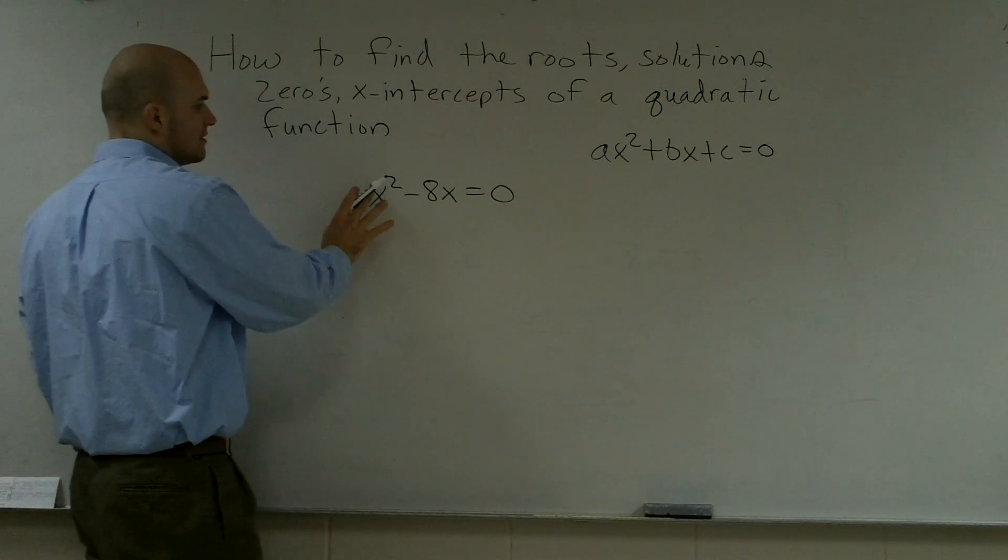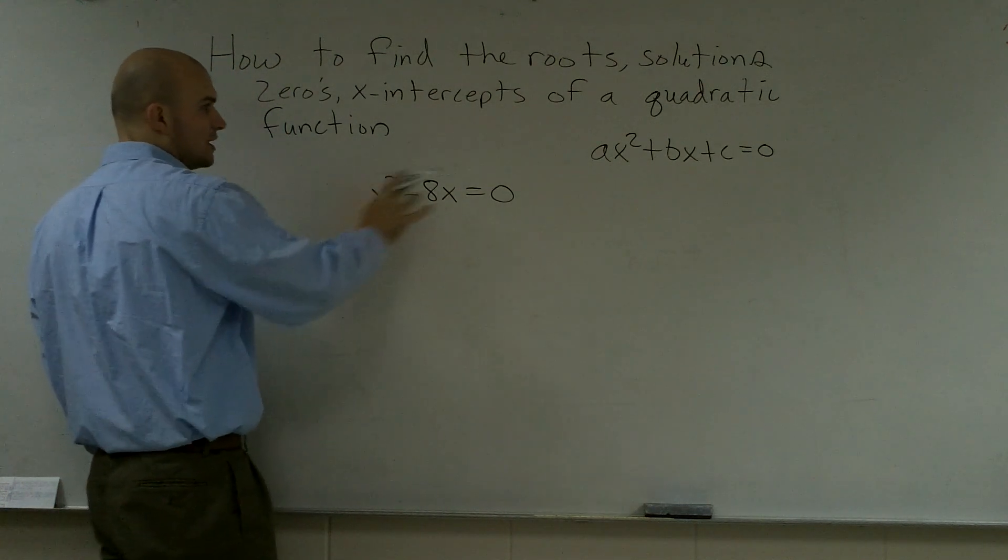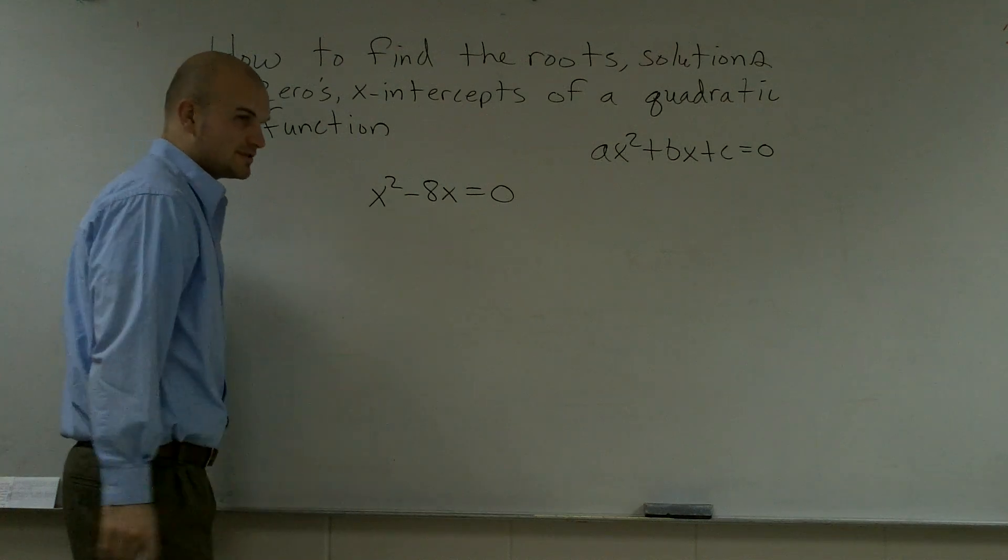So if I look up here, I have my first term where a is 1, my b is negative 8, and however, I don't have a c.